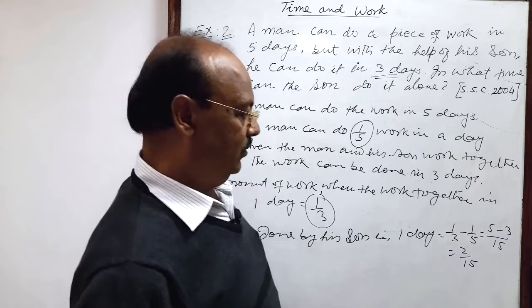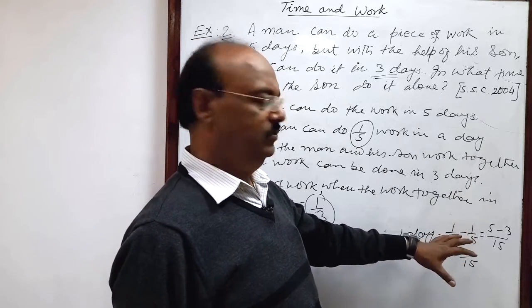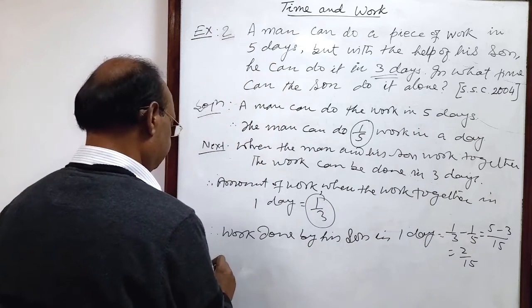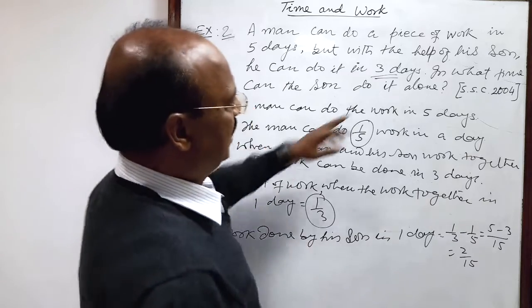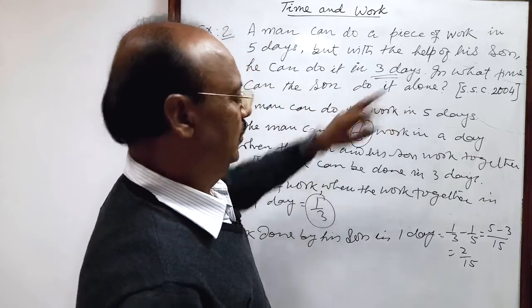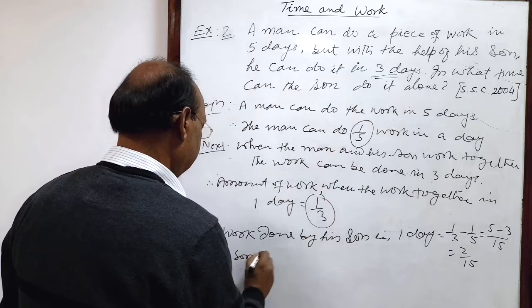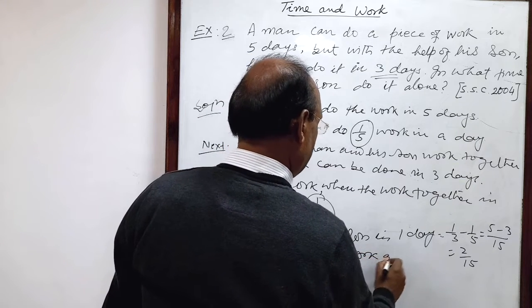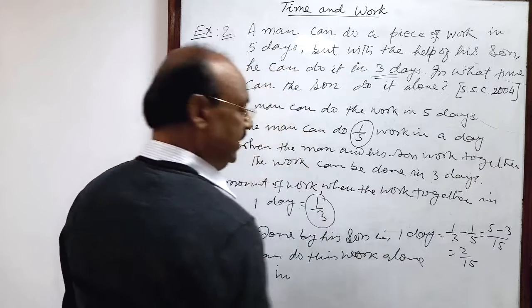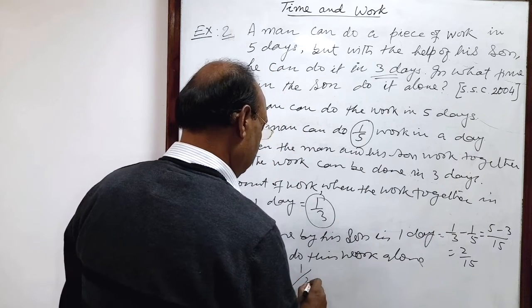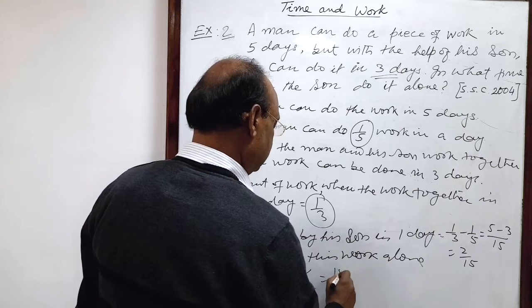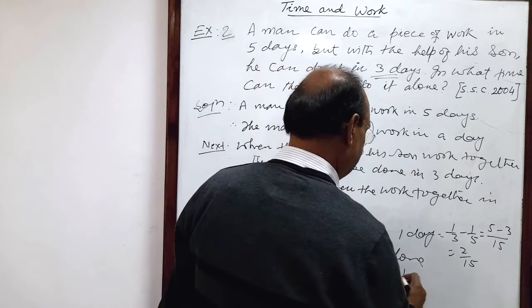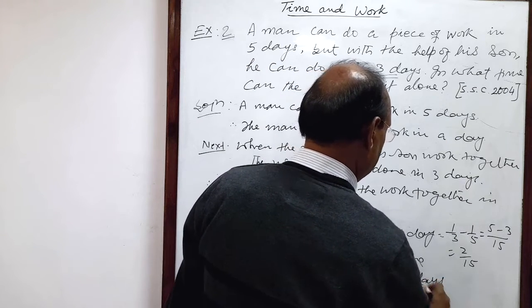And how many days will be required for doing the entire job? Reciprocal of this by unitary method. So the question asked: in what time can the son do it alone? The son can do this work alone in how many days? Reciprocal of this. One upon two by fifteen is equal to fifteen by two days. And this fifteen by two can be written as seven and half days. This is the answer.